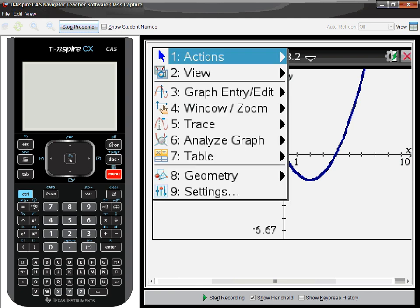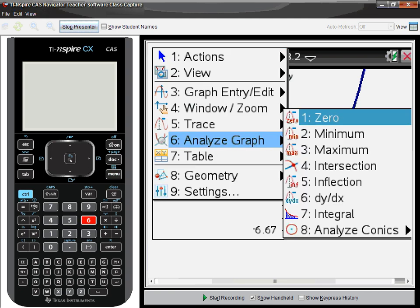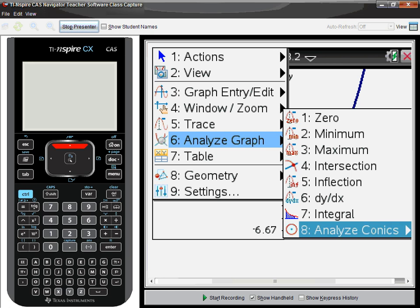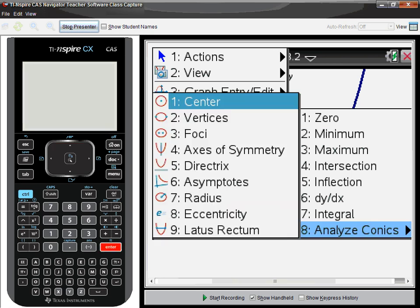I have a parabola here. I can press menu, 6, analyze graph. And you'll notice that number 8 is analyze conics. And just look at that list of things that you can find and the nice icons that show you what those things are.